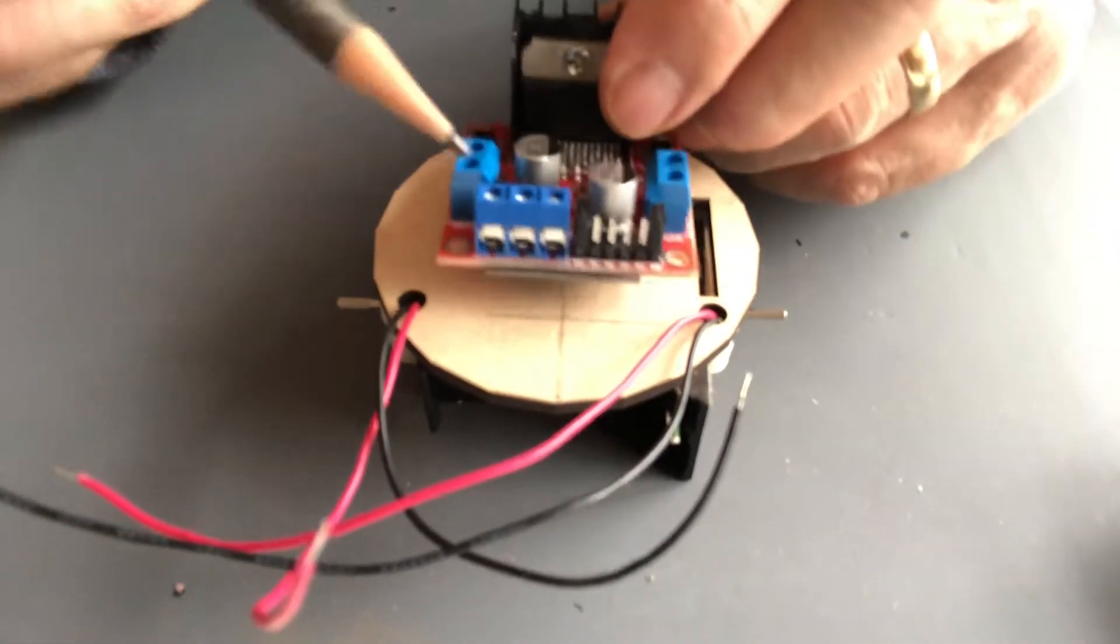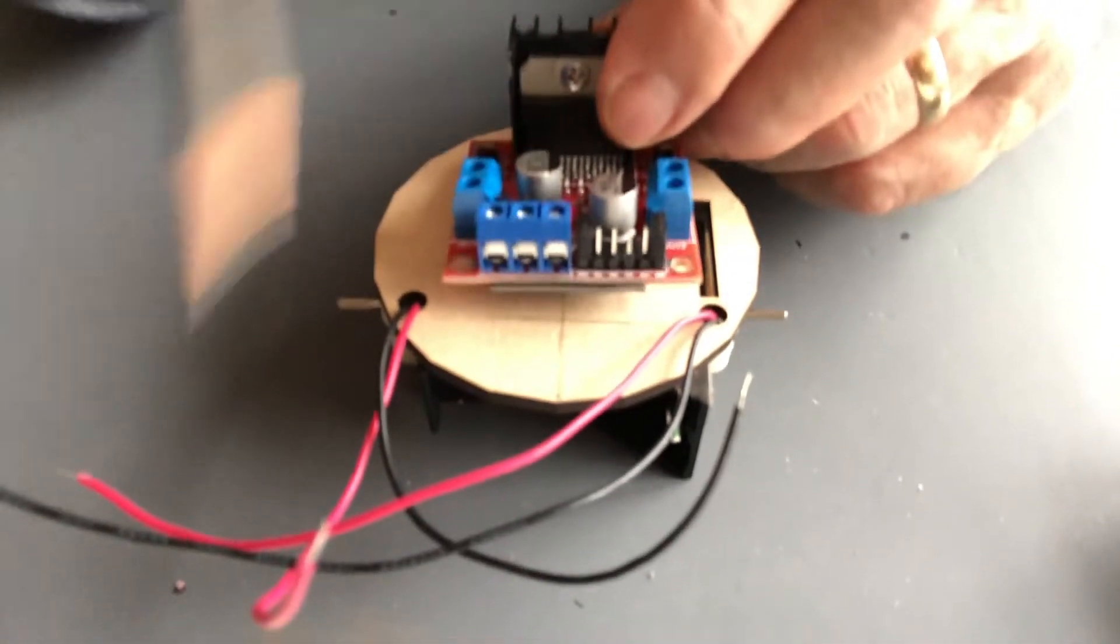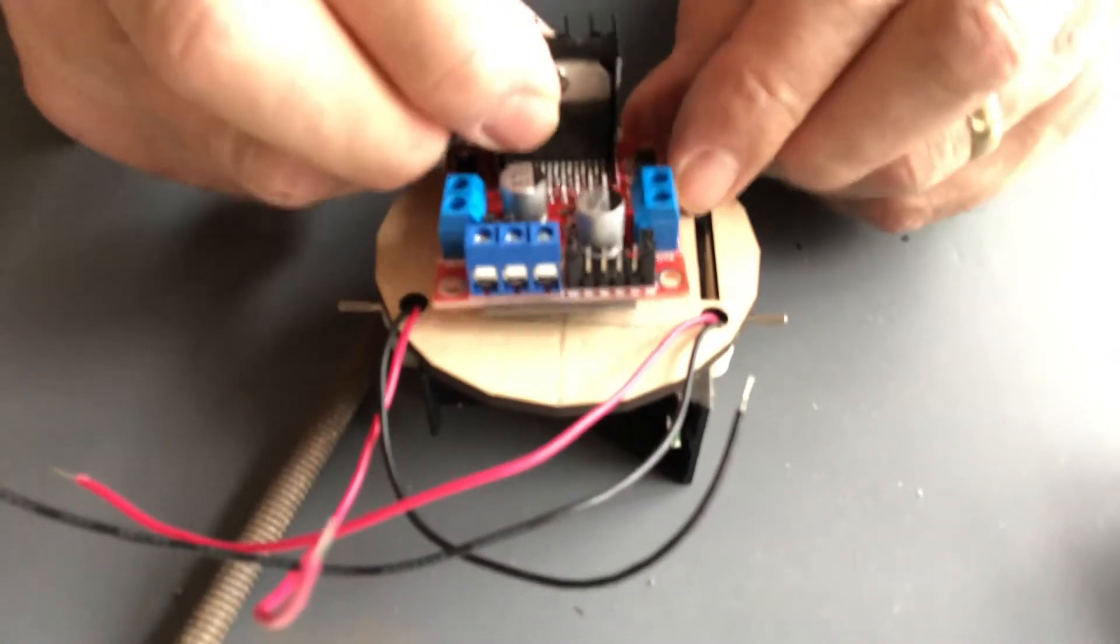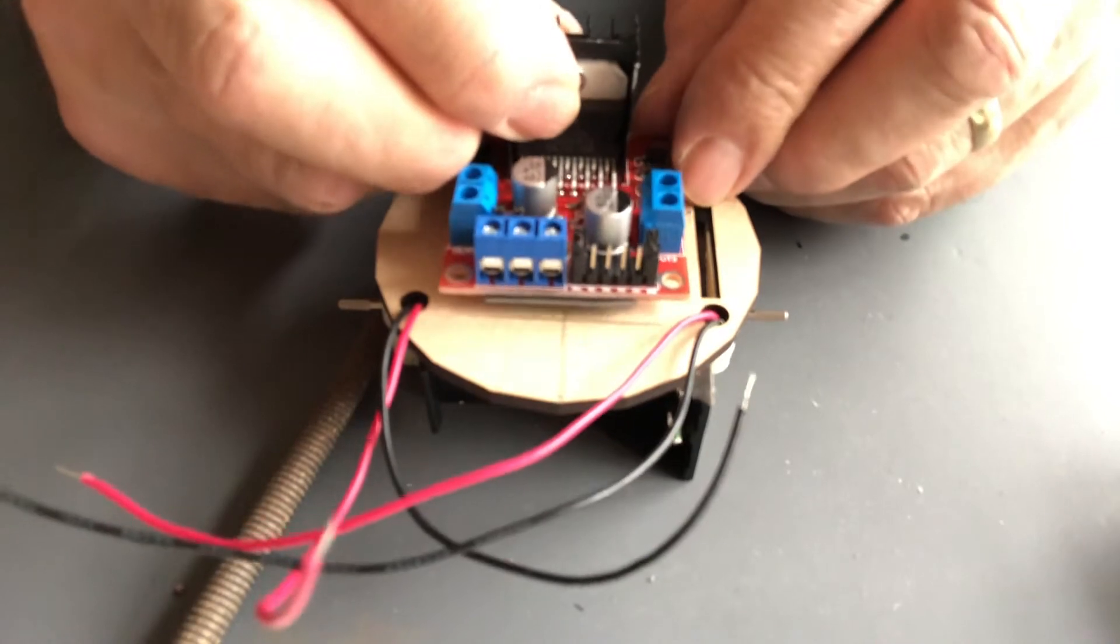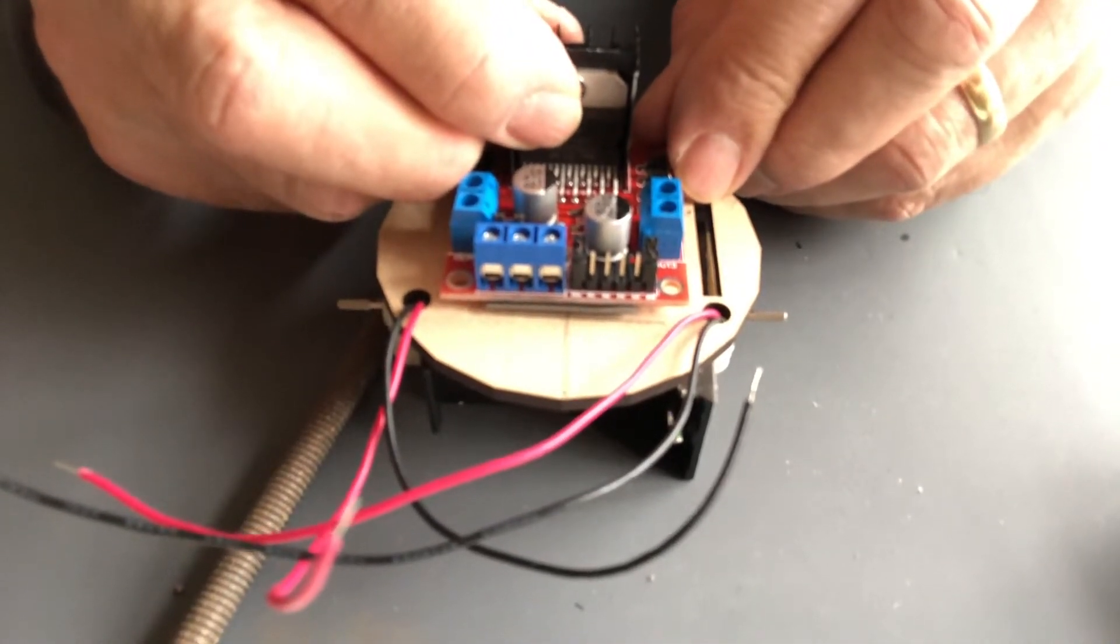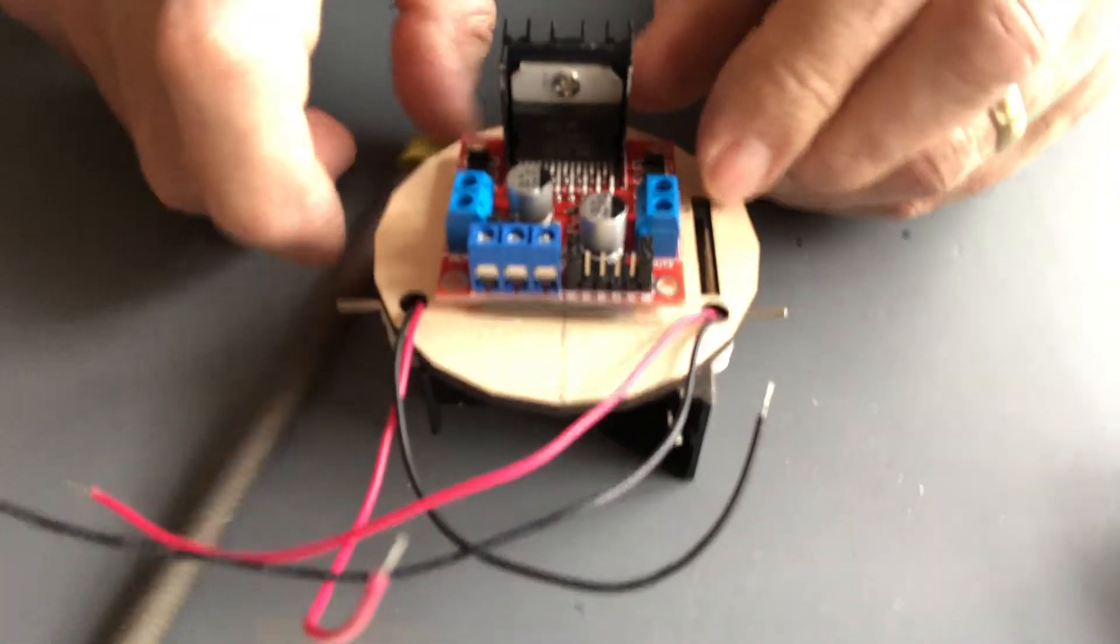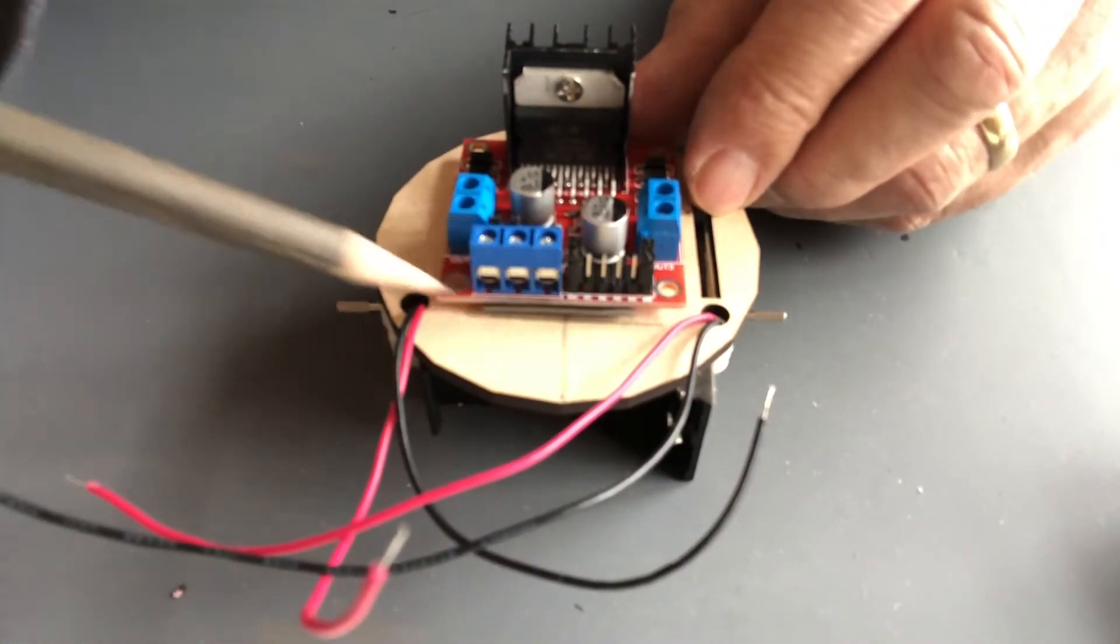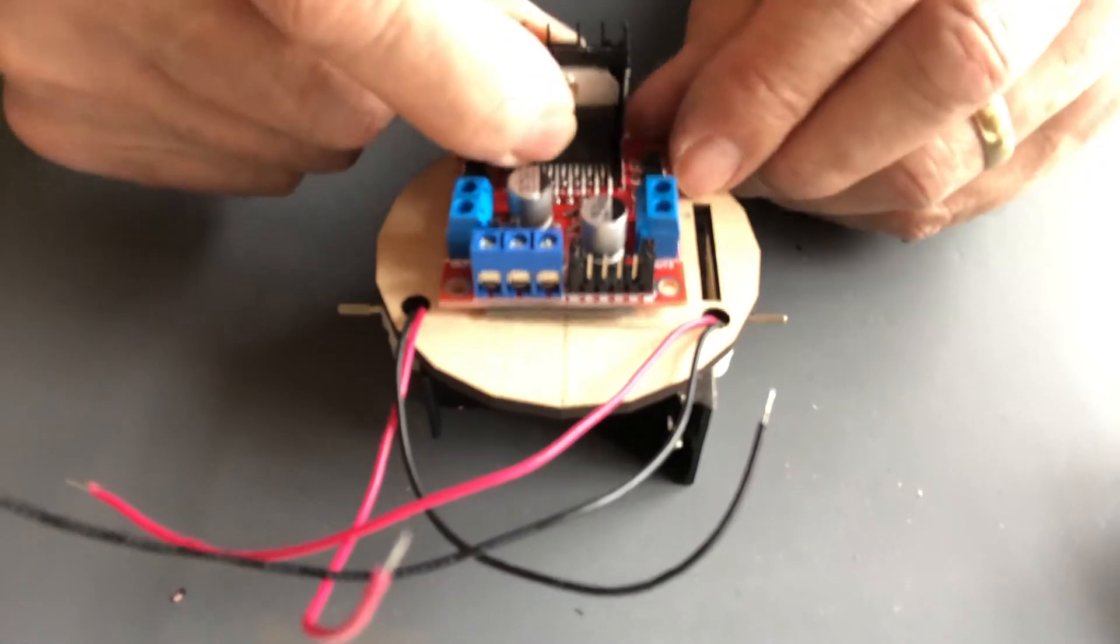The approximate center of the motor controller is right here in between those two fixtures. I line that up with my center line and again approximately in line with the two edges of the holes that are coming through the base.